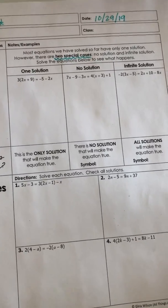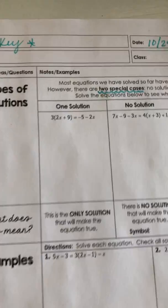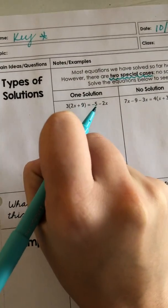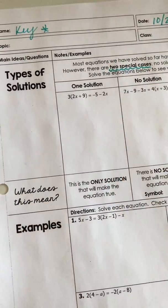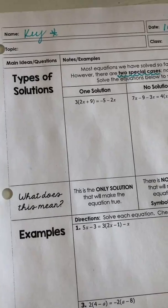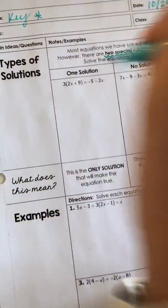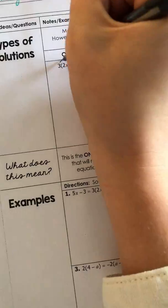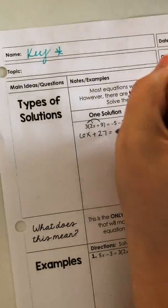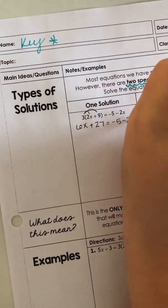For one solution, let's solve this problem: 3 times the quantity (2x + 9) equals negative 5 minus 2x. Remember our steps — we have that four-step process. Step one is to distribute if you see parentheses. So we distribute: 3 times 2x gives us 6x, and 3 times positive 9 is positive 27.